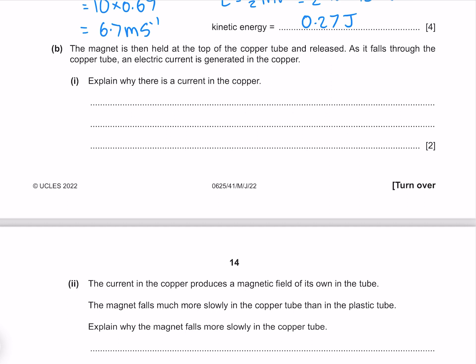The magnet is then held at the top of the copper tube and released. As it falls through the copper tube, an electric current is generated in the copper. Explain why there is a current in the copper. The copper experiences a changing magnetic field, causing an EMF to be induced.